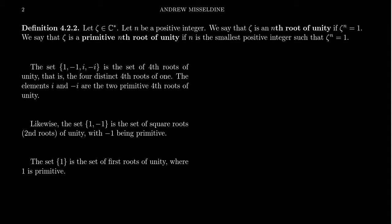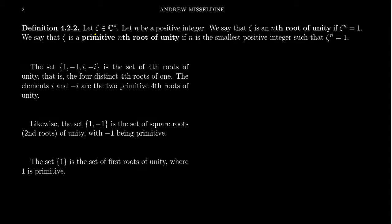Let zeta be a non-zero complex number and let n be a positive integer — 1, 2, 3, 4, whatever. We say that zeta is an nth root of unity if zeta to the n is equal to 1. So any complex number raised to this power n, if that power equals 1, we say it's an nth root of unity.